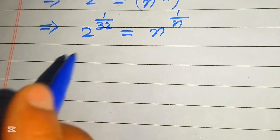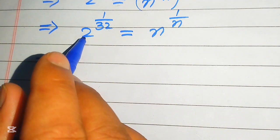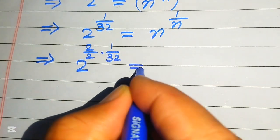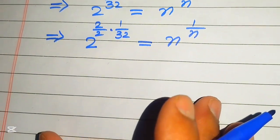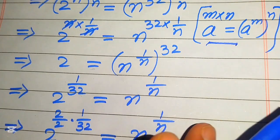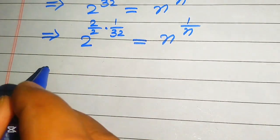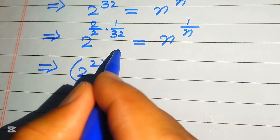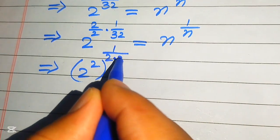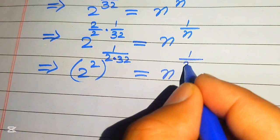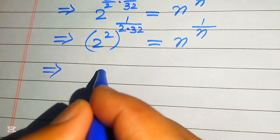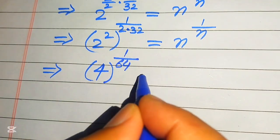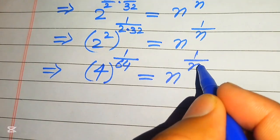For this we do some working on the left hand side: we multiply and divide the exponent by 2, giving 2 to the power of 2 over 2 times 1 over 32, equals n to the power of 1 over n. According to the exponent law we move this 2 inside the term: 2 squared with whole exponent 1 over 2 times 32, which equals 1 over 64. So 2 squared is 4 and 2 times 32 is 64, giving us 4 to the power of 1 over 64 equals n to the power of 1 over n.